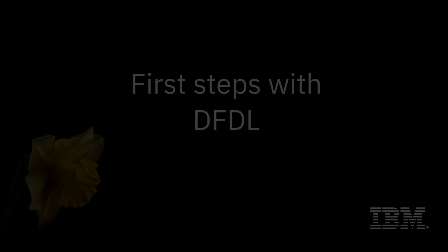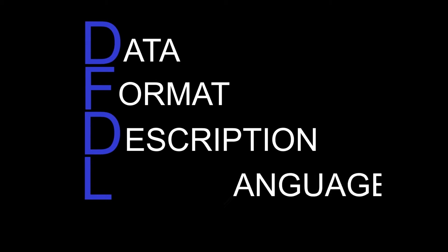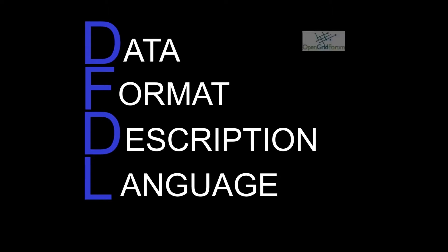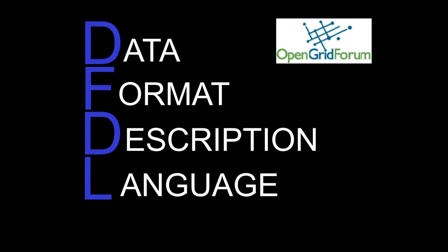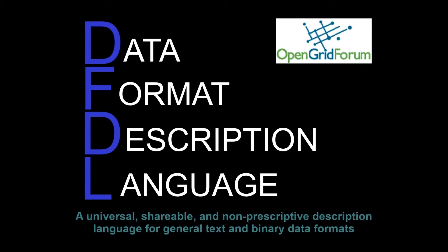As we learned in the introductory video, DFDL stands for Data Format Description Language. DFDL is a powerful modelling language from the Open Grid Forum. DFDL is not a data format and it does not dictate how your data must be formatted. Instead, DFDL is a language for describing a text or binary data format in a way that is independent of the data format itself.